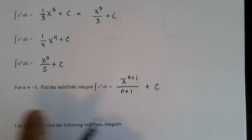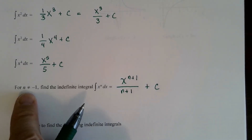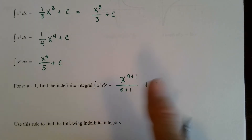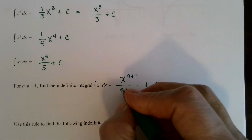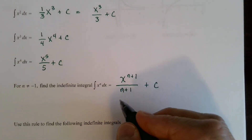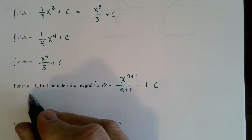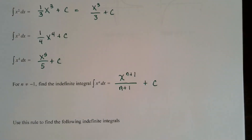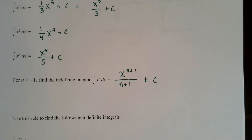We said n cannot be negative 1 — and you can clearly see why: if n were negative 1, we'd have division by 0. Some of you may already know what the antiderivative is when n equals negative 1, and we'll look at that shortly.